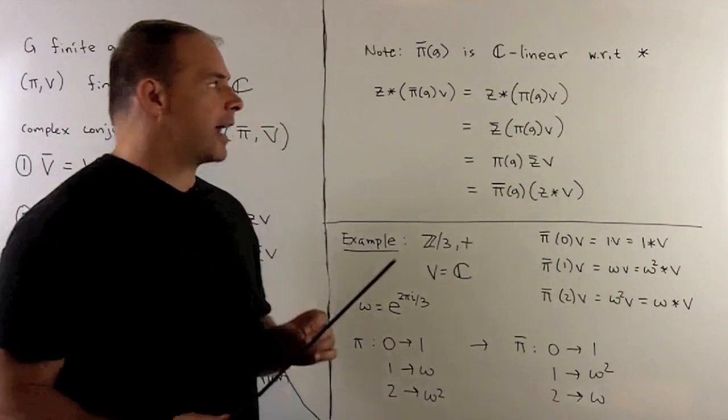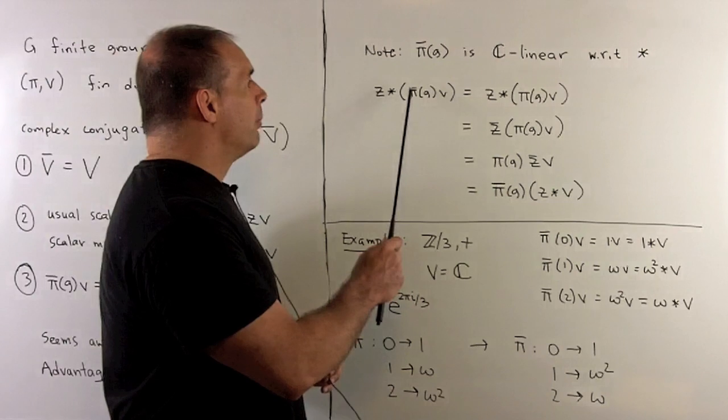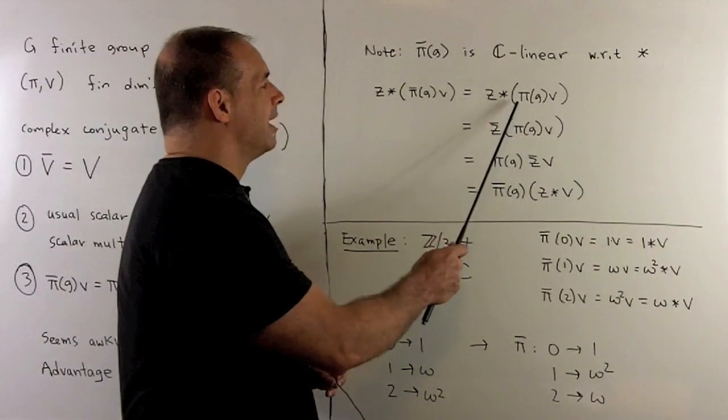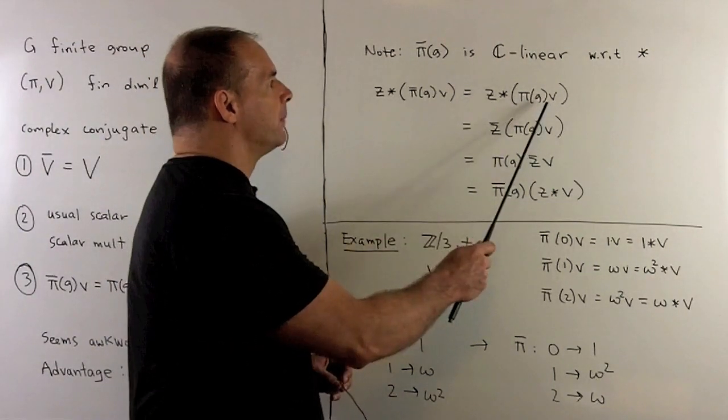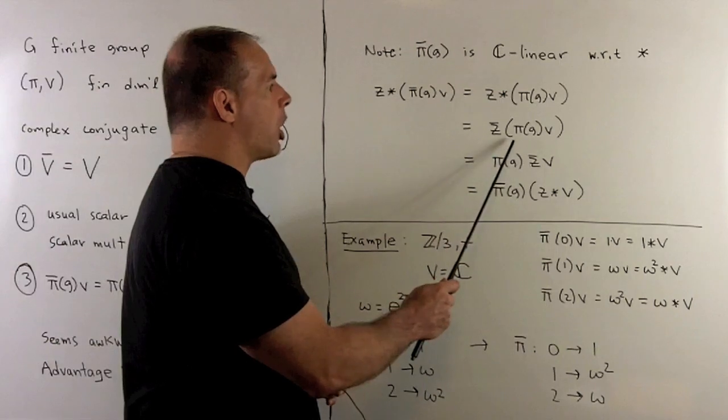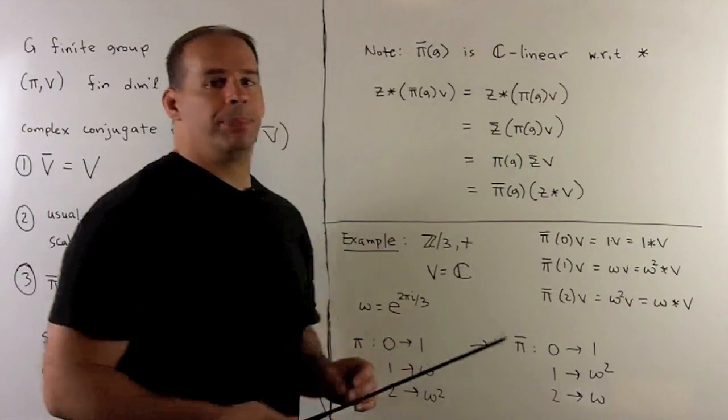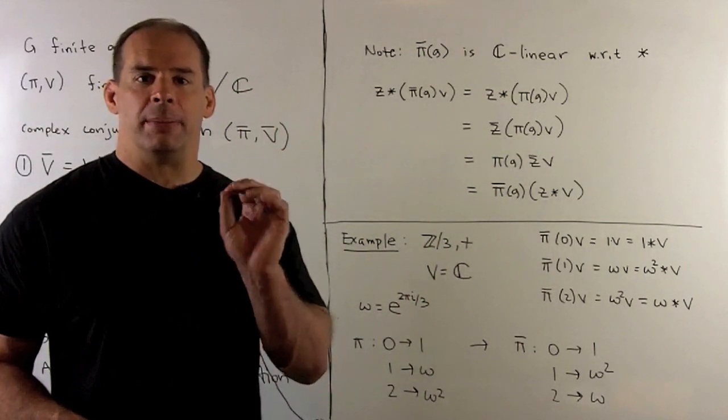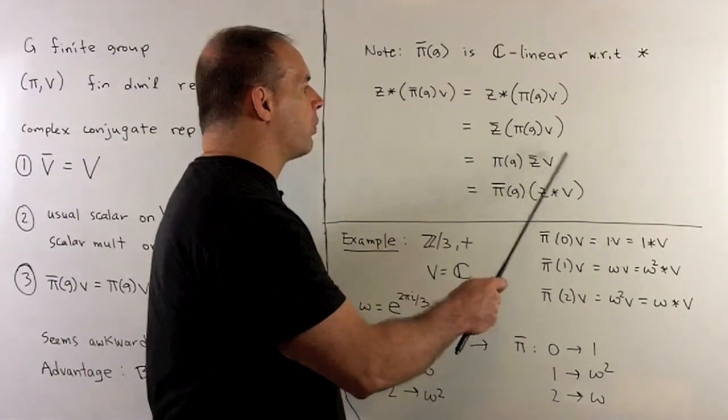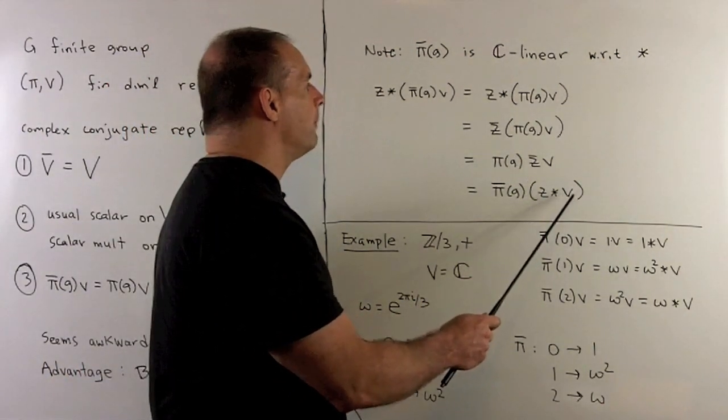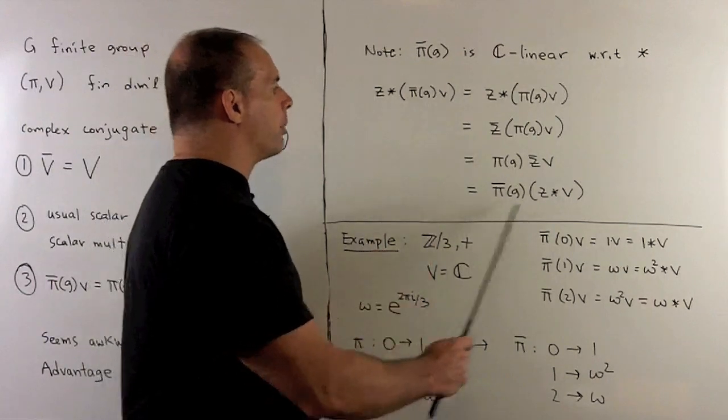This is a straight shot. We know that pi bar is equal to pi. Then, this is going to be an element of V. Here we're just going to multiply by Z bar. Since pi G is C-linear, that means the Z bar pushes through. I can rewrite this as Z star V. And then, we have our linear property.